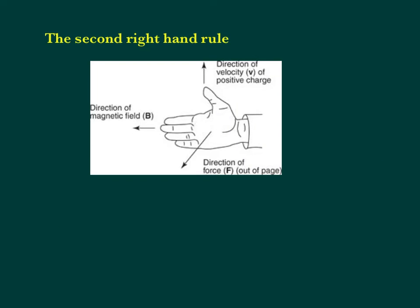Our second right-hand rule shows the relationship between the force, the magnetic field, and the velocity. The magnetic field is going to be your four fingers, because it's a large portion of your hand. The velocity or moving charge is your thumb — a little thing. These are perpendicular to each other, and this is always true — it doesn't change like in the first right-hand rule.